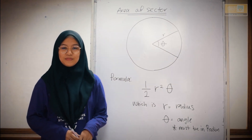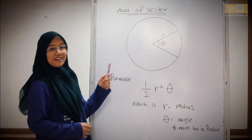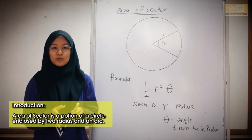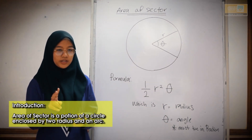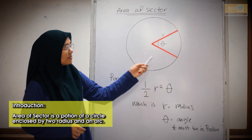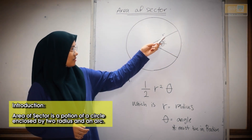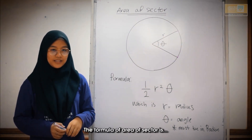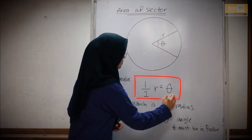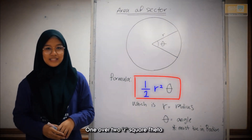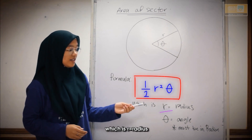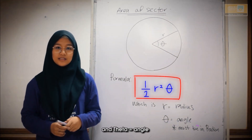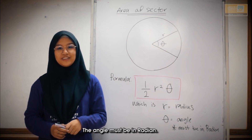Before we solve the problem, let me introduce you to the area of sector. Area of sector is a portion of a circle enclosed by two radii and an arc. The formula of area of sector is 1 over 2 R squared theta, where R is equal to radius and theta is equal to angle. The angle must be in radian.